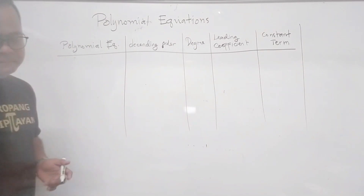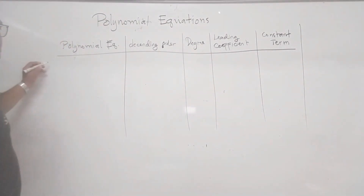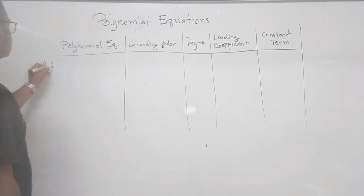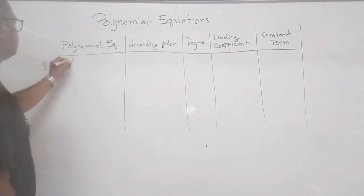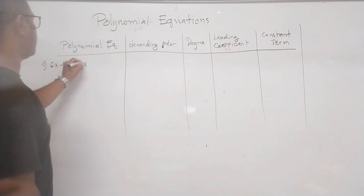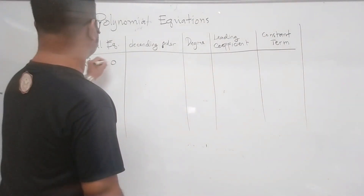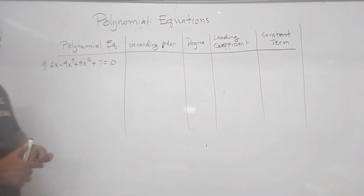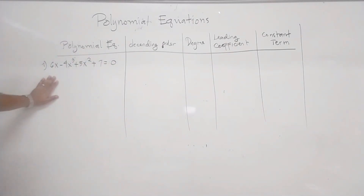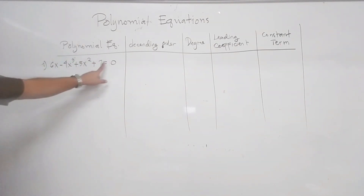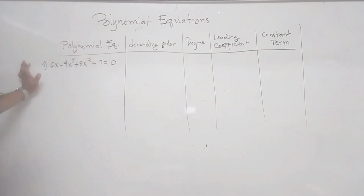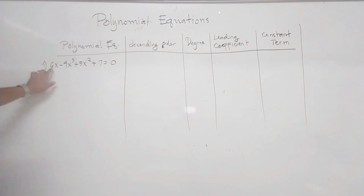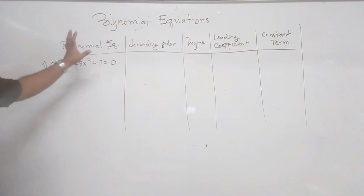So let's say we have a polynomial equation: 6x minus 4x cubed plus 5x squared plus 7 is equal to 0. This is a polynomial equation because the exponent of the variable is not a negative or fractional integer. But the expression here is not arranged in descending order.